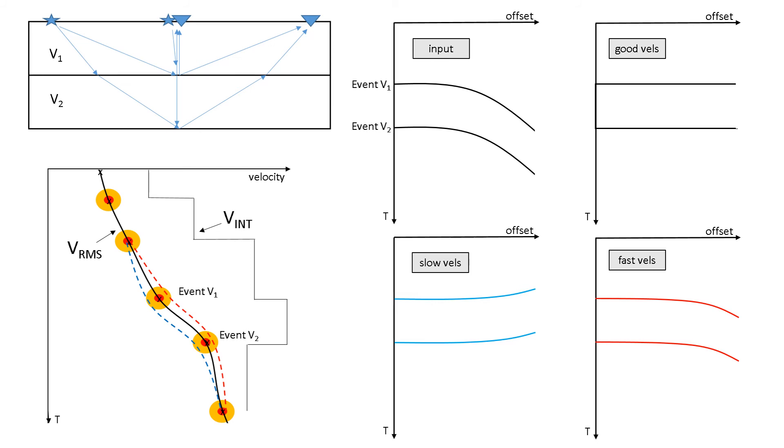Now if you look, you can see this blue dashed line where I picked a little bit slower or this red dashed line where I picked a little bit faster than optimally. Picking slower causes the events to curve up at farther offsets. Picking faster causes the events to curve down at far offsets.